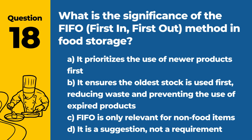Question 18. What is the significance of the FIFO (First In, First Out) method in food storage? The answer is B: It ensures the oldest stock is used first, reducing waste and preventing the use of expired products. FIFO is an effective inventory management practice for food safety.